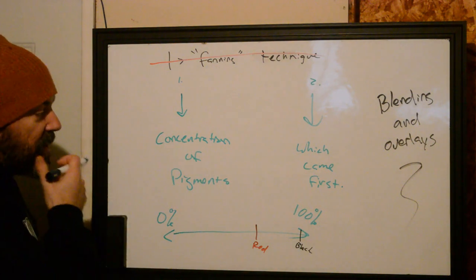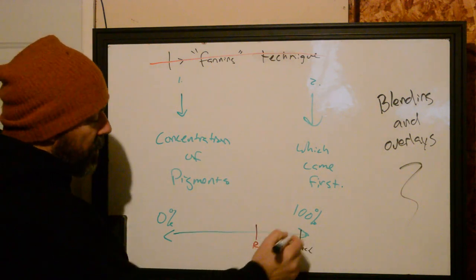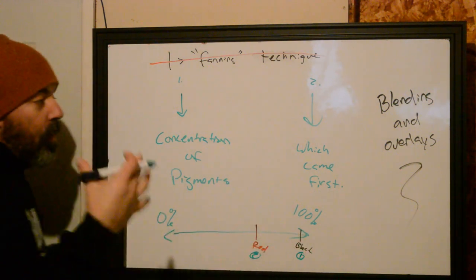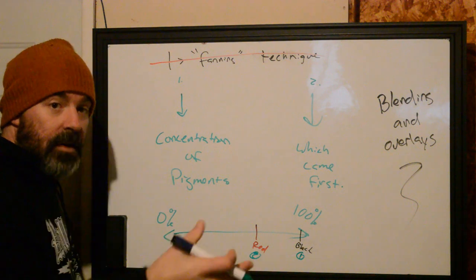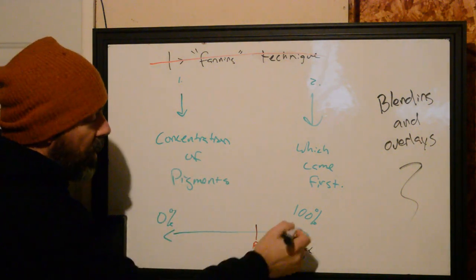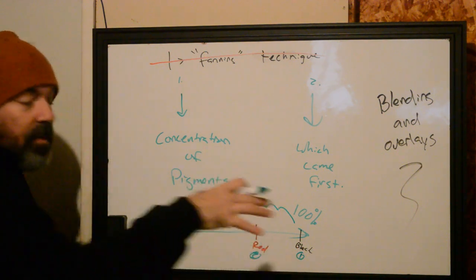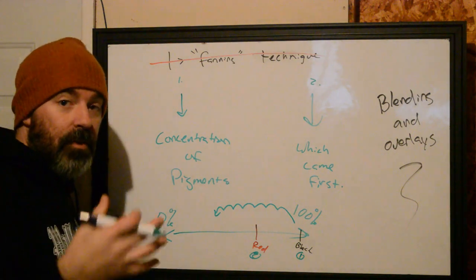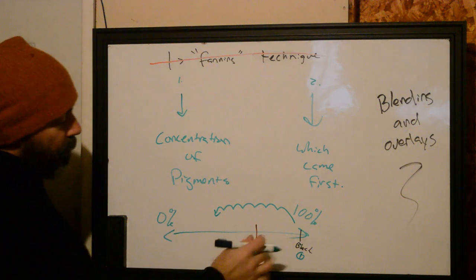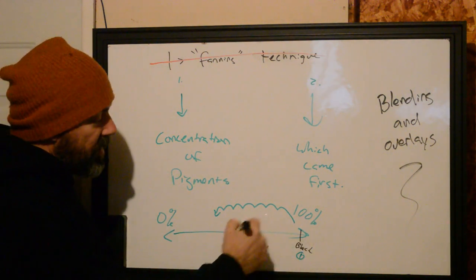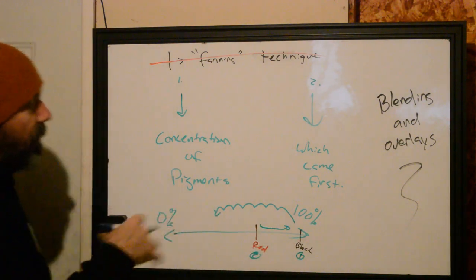It really does come down to which came first when we're thinking about blending and creating overlays. Let's say you put 100% black, fully fill that space, then decide to put red on top of it. What's happening now is that 100% black will be knocked into the skin or pulled out due to additional trauma. If we do a single pass with red, we'll end up with a very dark red or a tinted black with red.